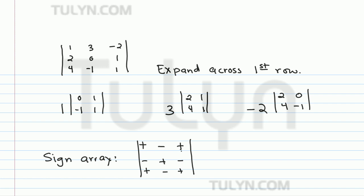It's going to be plus, minus, plus in the first row, minus, plus, minus in the second row, and plus, minus, plus in the third row.